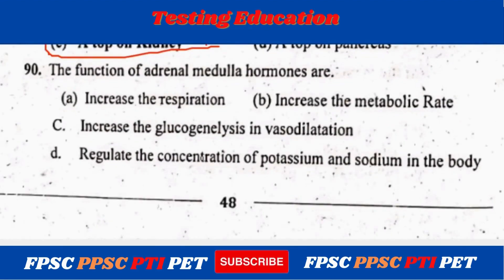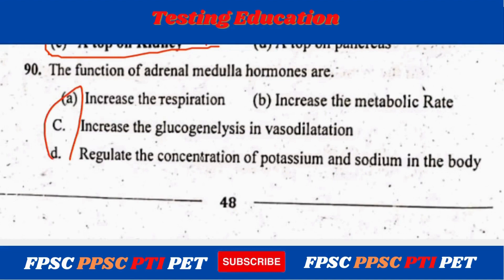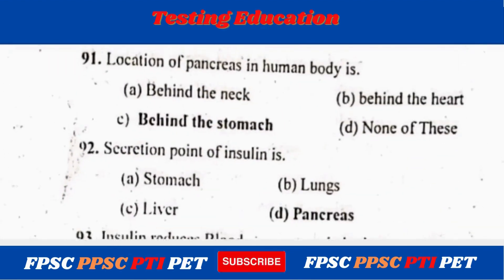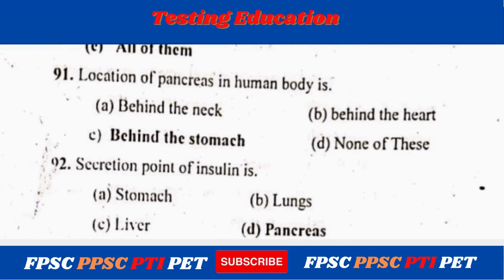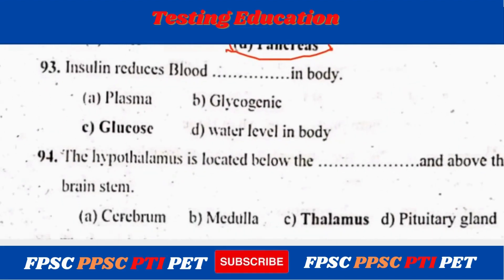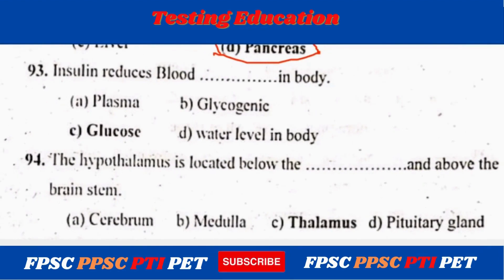The functions of the adrenal medulla hormones are: increase respiration, increase metabolic rate, increase glycogenolysis and vasodilation, and regulate the concentration of potassium and sodium in the body — all of these. The location of the pancreas in the human body is behind the stomach. The secretion point of insulin is the pancreas. Insulin reduces blood glucose in the body.